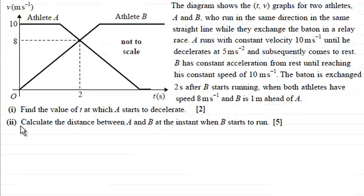And we've got two parts to this question. The first part is to find the value of t at which A starts to decelerate. And in part two, calculate the distance between A and B at the instant when B starts to run.